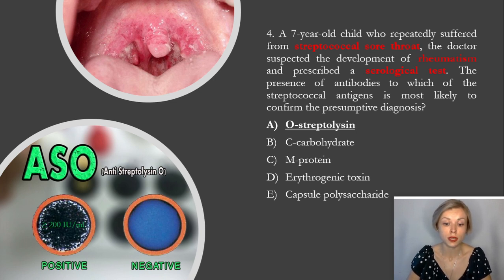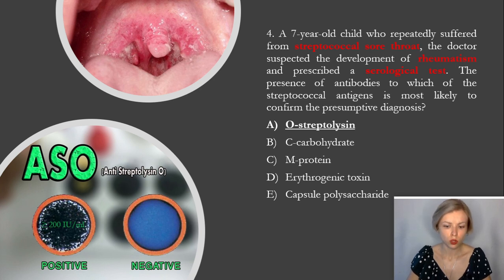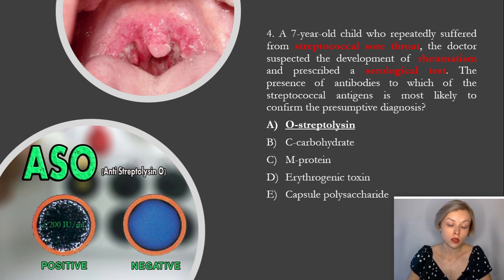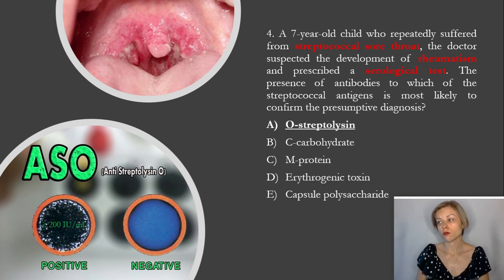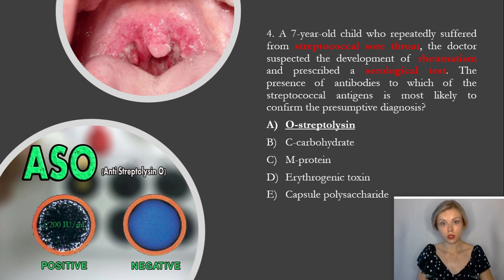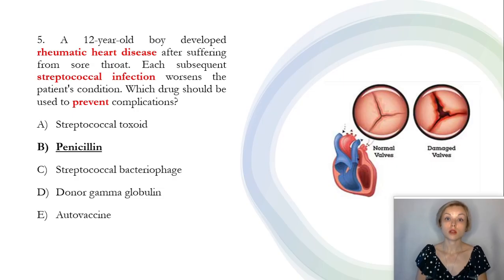Group A streptococcus is beta-hemolytic streptococci. The most common complication is carditis. Only anti-streptolysin O is an indicator of a previous streptococcal infection. This can be determined by the latex agglutination reaction, for example with the streptolysin O antigen. If we see agglutination, then the antibody titer is more than 200 units per milliliter — this is a diagnostic titer for adults, but for children this indicator equals 150. So the correct answer is A, O-streptolysin.